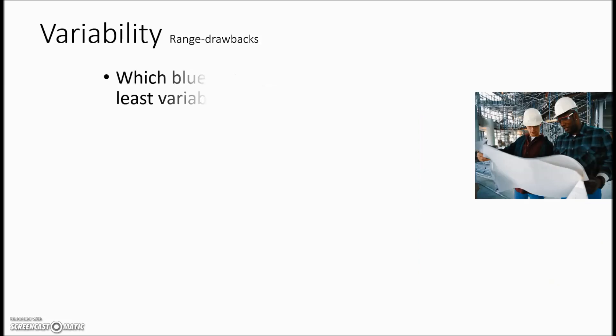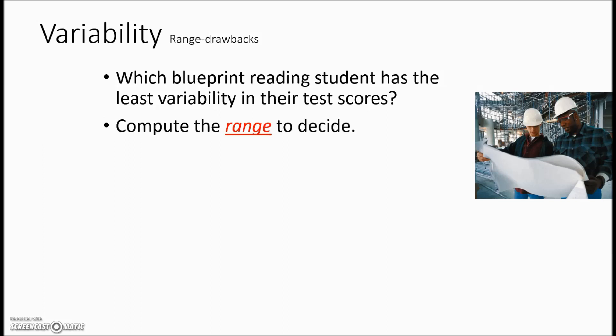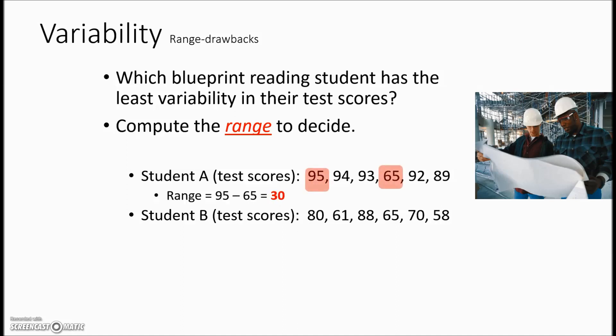There are some drawbacks with determining range. Here's an example: which blueprint reading student has the least variability in their test scores? Similar to the golf course example, we would calculate the range. So here we have student A's test scores. We have student B's test scores. Determining the range we identify the highest and the lowest or smallest and largest gives us a 30 for student A and turns out a range of 30 for student B.